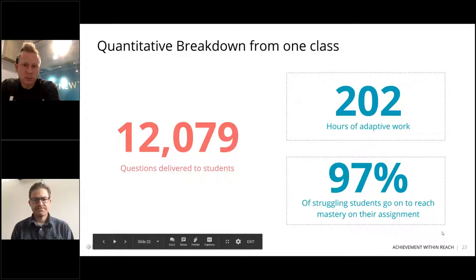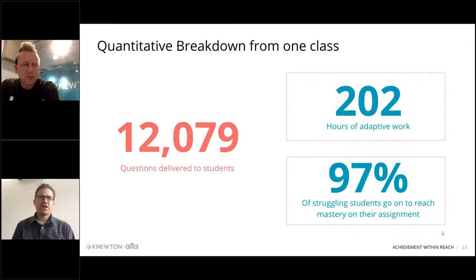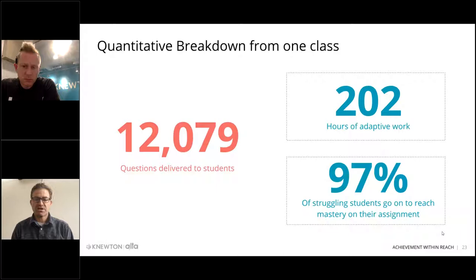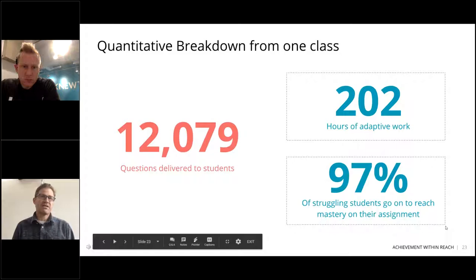Here I'm going to show you some of the data you can get back. This was a classroom a couple of summers ago — a microeconomics class. You can see the number of questions delivered to students over an entire course with a full 35-student class. The key there is the 97% of struggling students who went on to reach mastery. What that tells you is that these were struggling students who were getting significant questions wrong, but they were able to go on and complete the assignment and demonstrate that they understood the material.